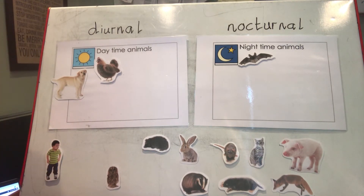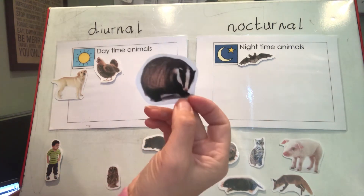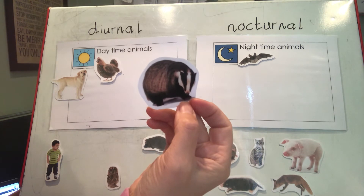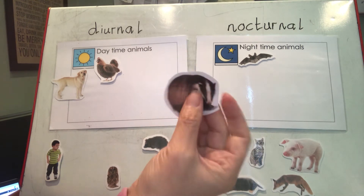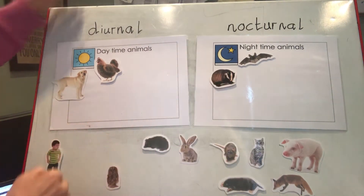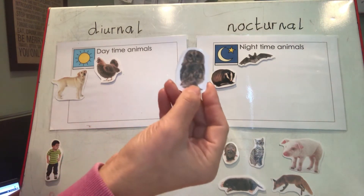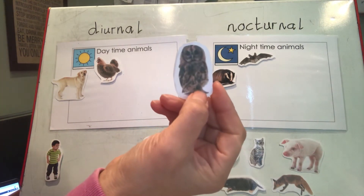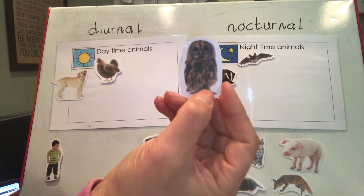Let's try a badger — do you see badgers out at night or during the day? Well done if you said nocturnal — they come out at night. Now this is what we've been learning about this week: an owl. We all know this one — tell your grown-up: owls are nocturnal.